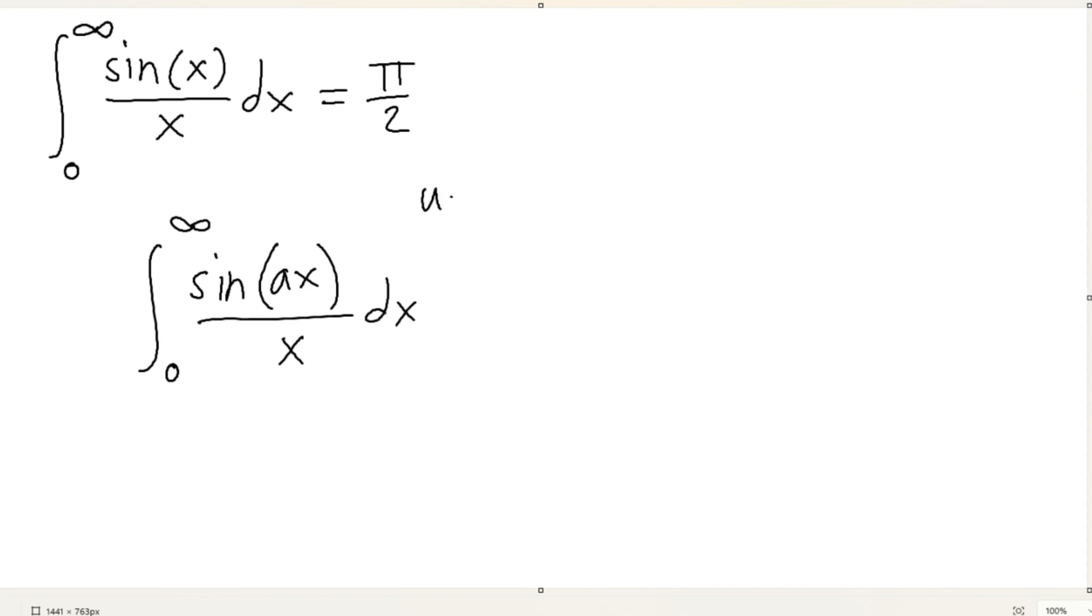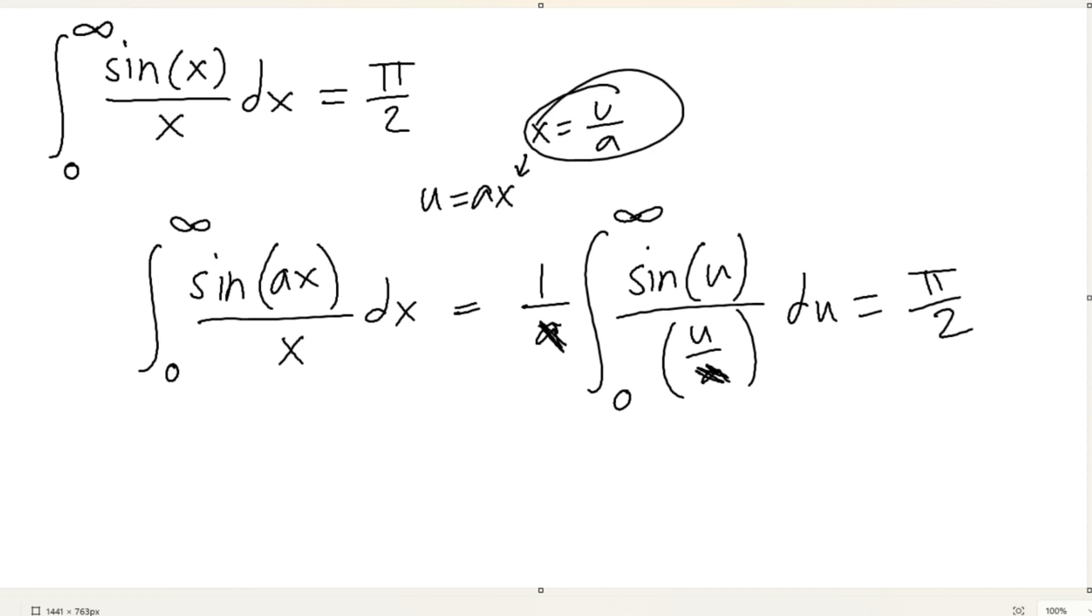For any real number a, if I let u equal ax, then this is just going to equal to 1 over a times integral from 0 to infinity, sine of u over u over a du. And the constants are going to cancel each other out because of this x. So it's still going to equal to pi over 2.